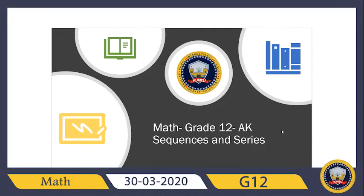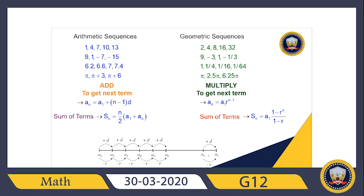Hello everyone, hope you're good. We will continue our topic speaking about sequences and series. As we said, we have two types of sequences: the arithmetic one, where we add to find the next term, and the geometric sequence, where we multiply to find the next term. We have two formulas for each one of these sequences: the nth term formula and the sum of terms formula.